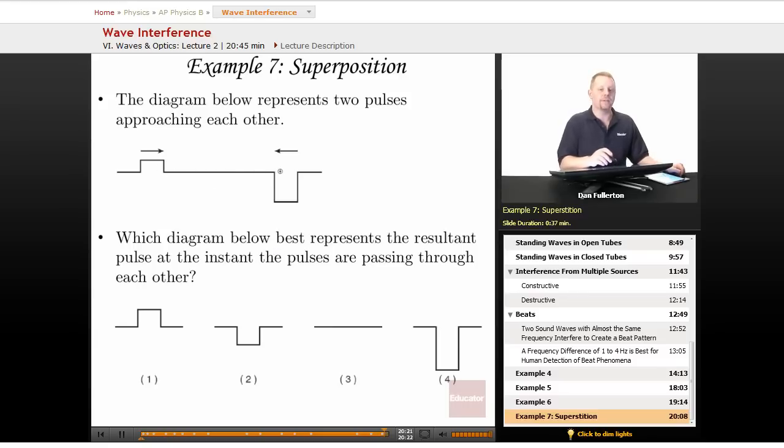Well, when they interfere, they're going to follow the law of superposition. That means their amplitudes are going to add. We have one positive, one negative. And the negative is a little bit bigger than the positive. So what we're going to end up with is a net negative, but smaller than the initial. Two must be our correct answer.